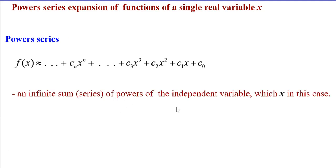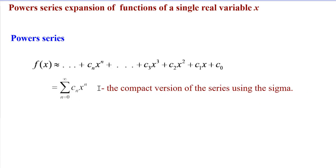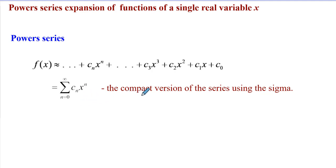This is actually an infinite sum of powers of the independent variable x. If we determine the general coefficient, we can also express it in a compact form using the sigma sign. When we take this function, which is dotted to indicate it continues to infinity, and express it using sigma, we say that this series has been given in its compact form.